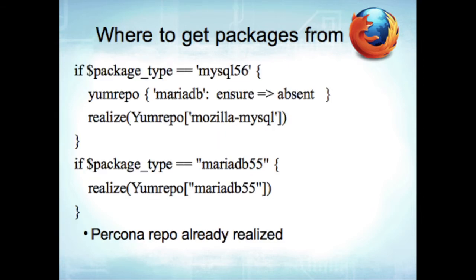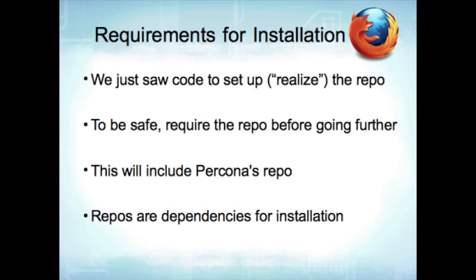If the package type is MySQL 5.6, we realize the repo, make sure MariaDB is not there, and tell it to make sure the Mozilla MySQL private repo hosting our 5.6 packages is present. No matter what configuration management tool you use, you learn these dependency conflicts the hard way the first time. For MariaDB 5.5, just realize the MariaDB repo — no need to remove a Percona repo, because there's no conflict. We want to require the repo before installing. Repos are dependencies for installation: we can't install Percona Toolkit unless we're dependent on having realized that repository.